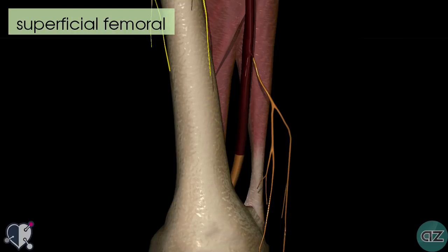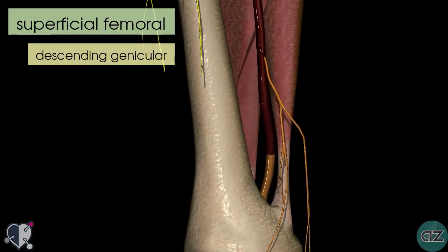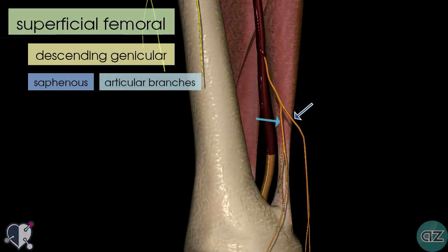Just before the superficial femoral artery leaves via the adductor hiatus, it gives off the descending genicular artery. This artery has two main branches: the saphenous branch, which passes medially and anastomoses with the medial superior genicular artery, and the articular branch, with multiple articular branches anastomosing around the knee joint.